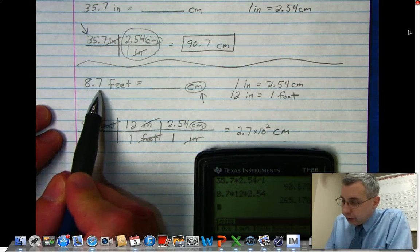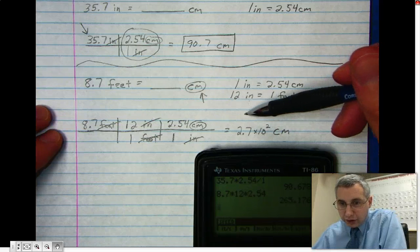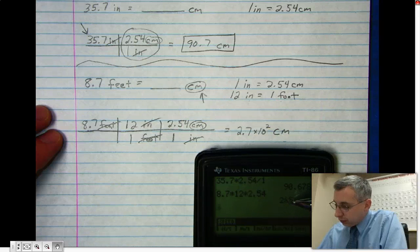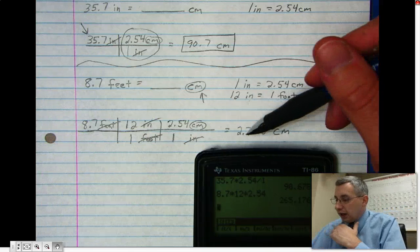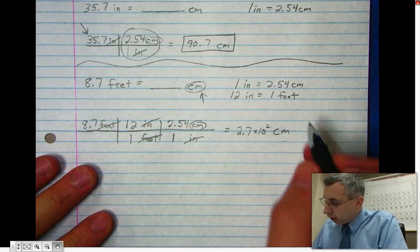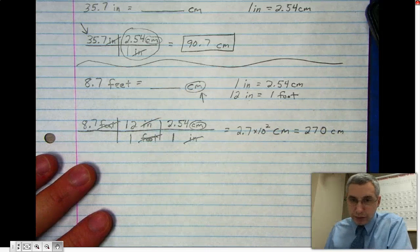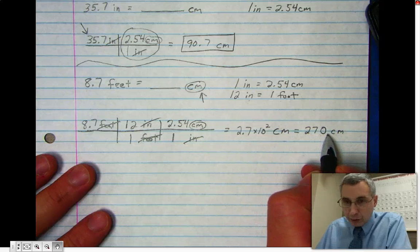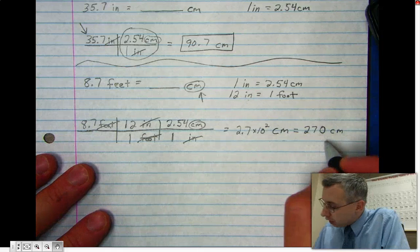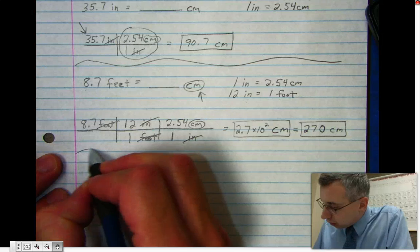Because there are only two significant figures in 8.7, my answer can only have two significant figures. So instead of a 2, 6, and 5, I can only have the 2 and the 7. The 6 rounded up because 65 rounds up to 70, so it became 2.7, and I have to multiply by 10 to the second power so the decimal point moves over twice. You could also write this as 270 centimeters. Either one of these answers would technically be acceptable.